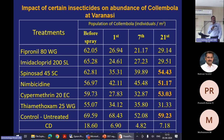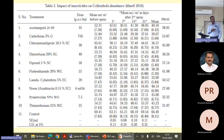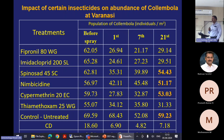Even though cypermethrin is very much detrimental, we can see a build-up in population after 20 days. Similarly spinosad shows an increase in population after seven days. Some insecticides, even though detrimental in the initial period, somehow lead to population increase as they decompose fast. For cyantraniliprole and chlorantraniliprole, the half-life is very less. Even though there is a tremendous decrease of beneficial insects initially, we could see a build-up after three weeks.